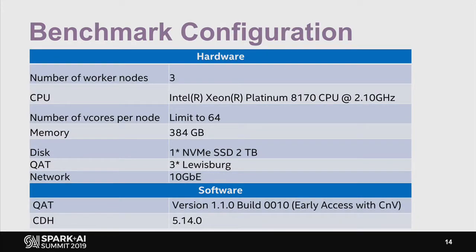This is the configuration for the benchmark. We use a three-node cluster, each node with two Skylake 8170 CPUs and 384 gigabytes of memory. For storage, we use three NVMe SSDs per node, each up to two terabytes capacity. We have three QAT devices in each node, and the NIC is 10 gigabit Ethernet. We use CDH 5.15 for our Spark and Hadoop environment.